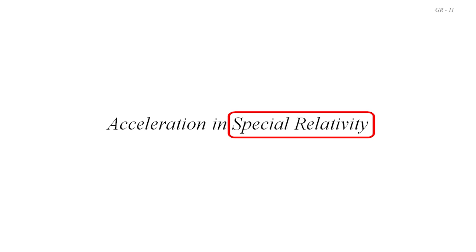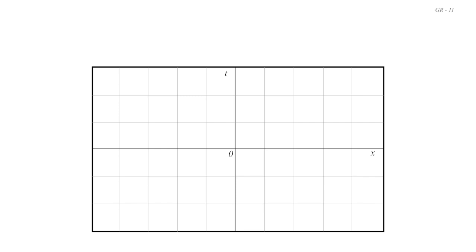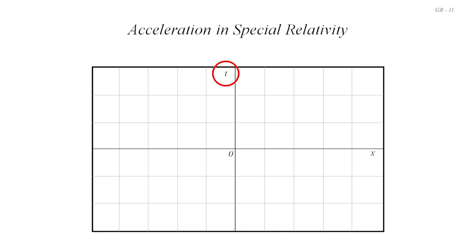After reviewing some basic ideas of special relativity, particularly through space-time diagrams in the last video, we now want to look briefly at what the world line of an accelerating object might look like in our two-dimensional version of Minkowski space-time, which has one space dimension x and one time dimension t. This is what we might call a flat space-time — no masses giving rise to curvature.